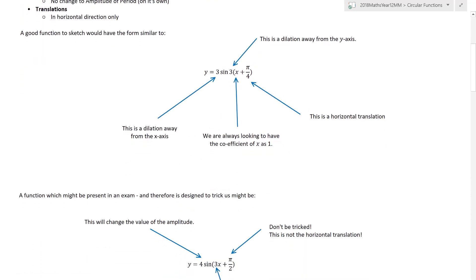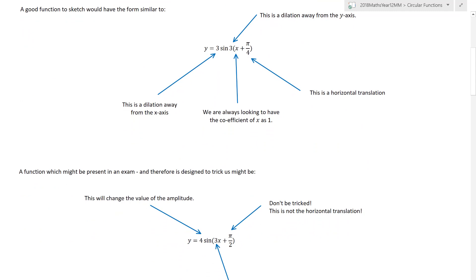So as I've said in the previous lesson a good function to sketch would be in this form. We are always looking for the coefficient of x to be 1 not just in sine or cosine transformations but rectangular hyperbola, trig, square root graphs, circles. Always looking for a coefficient of x to be 1 and positive 1 because that makes life so much easier. Then you can deconstruct what all of these transformations are.